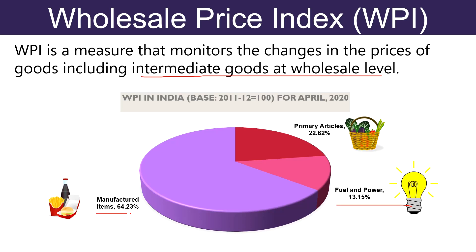Last is Manufacture Items which is given 64.23% weight. It includes manufacture of basic metals, chemicals and chemical products, electrical equipments, rubber and plastic products and textiles, dairy products, bakery products etc.